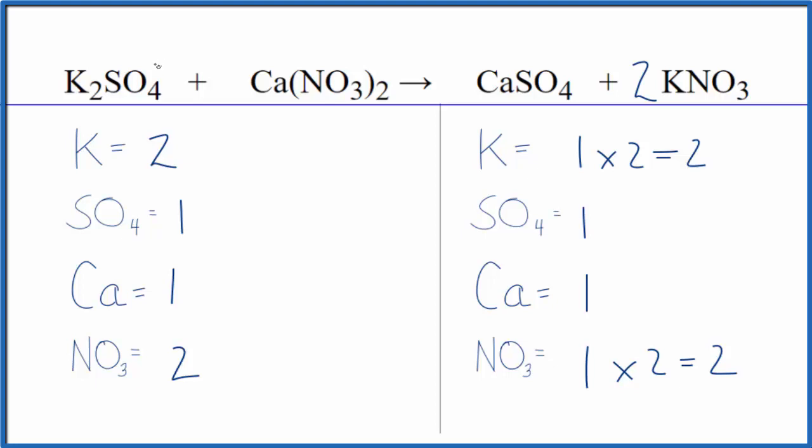So you can see how helpful it is if your polyatomic ion appears on both sides. Just count it as one thing.